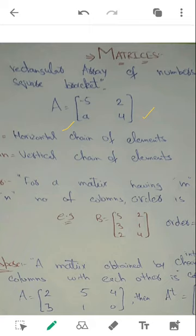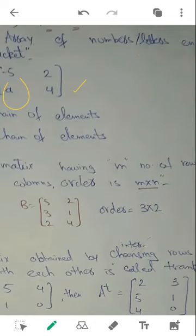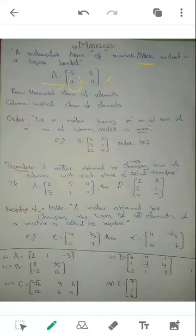Now please understand two basic naming conventions. First, a matrix is always denoted by a capital letter — for example, matrix A, where A must be capital. No matrix can be named with a small letter. Second, any letter written inside a matrix must be a small letter. A capital letter cannot be enclosed inside a matrix.